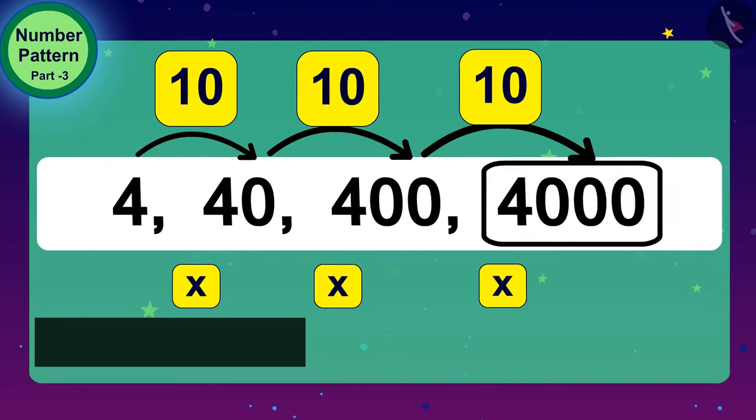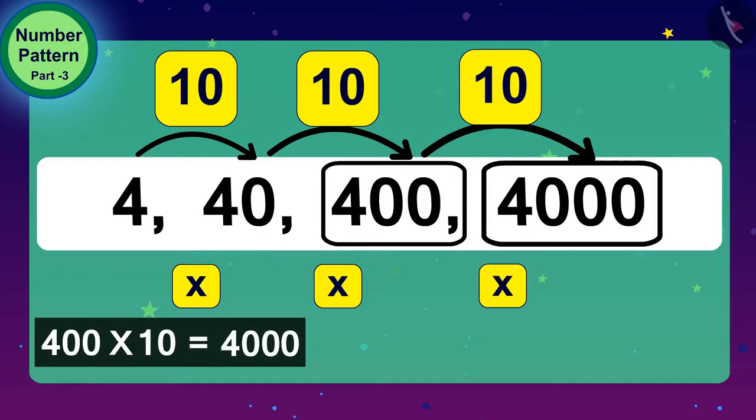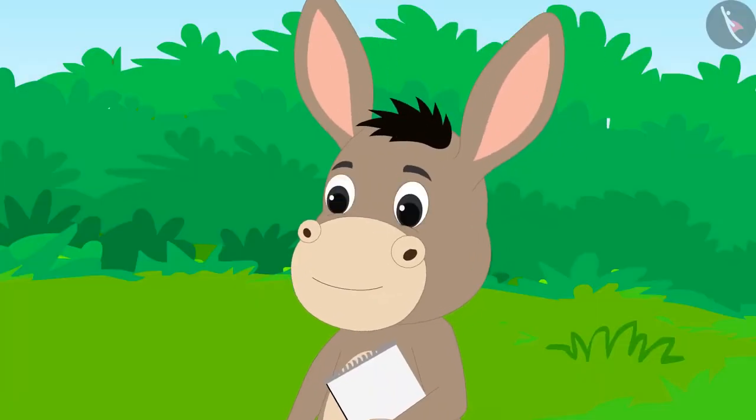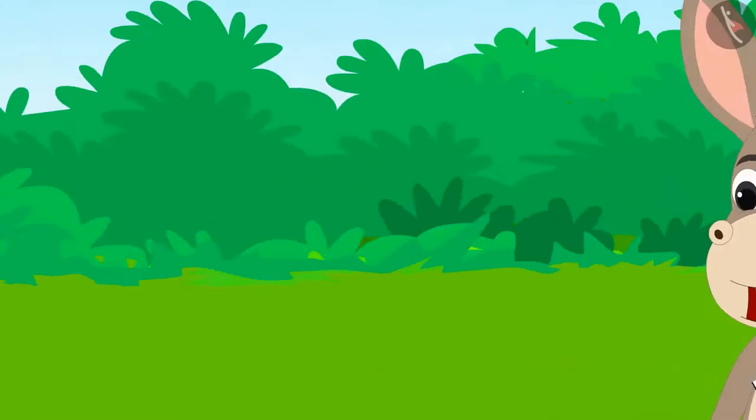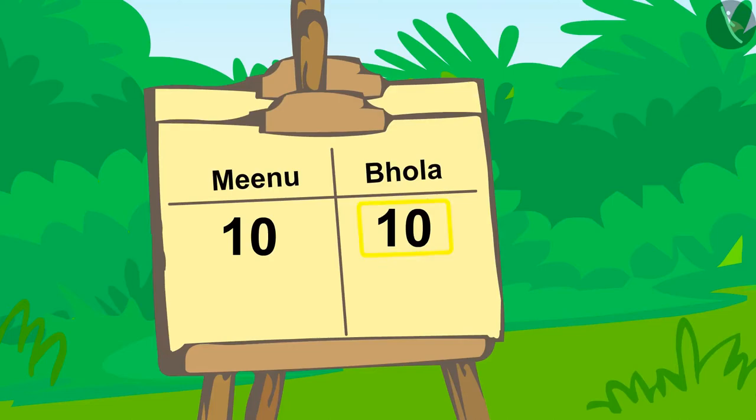We have found the rule of this number pattern. To get the next number here, we are multiplying the number before it by 10. This time, Bhoala correctly identified the rule of number pattern and won 10 points.